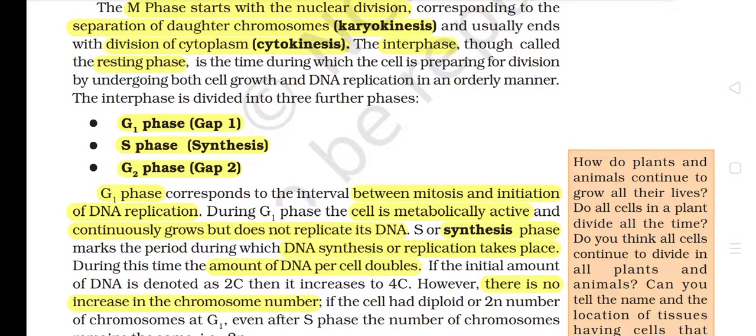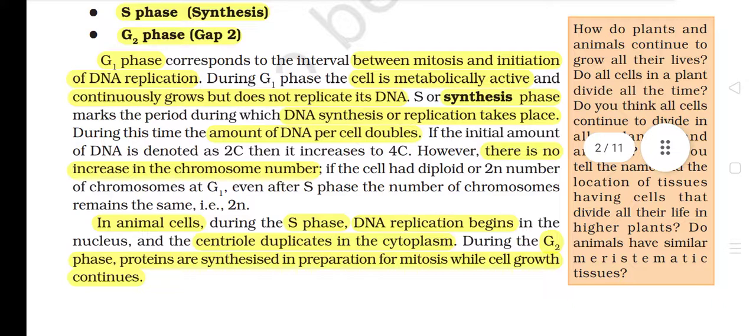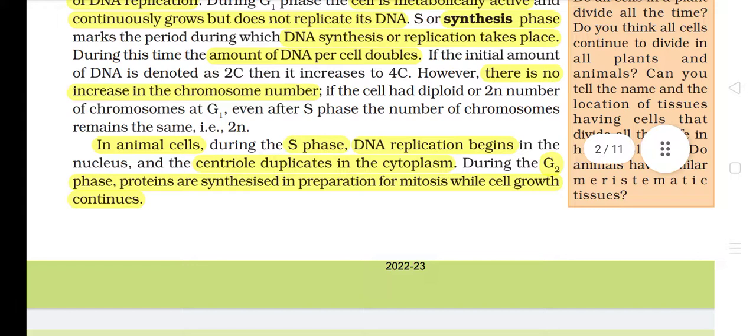G1 phase corresponds to the interval between mitosis and initiation of DNA replication. During G1 phase, the cell is metabolically active and continuously grows but does not replicate its DNA. S or synthesis phase marks the period during which DNA synthesis or replication takes place. During this time, the amount of DNA per cell doubles. If the initial amount of DNA is denoted as 2C, then it increases to 4C.